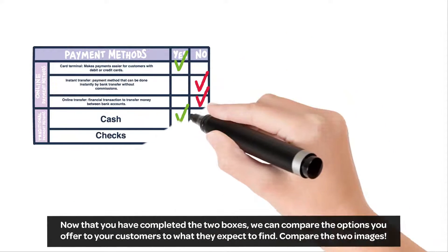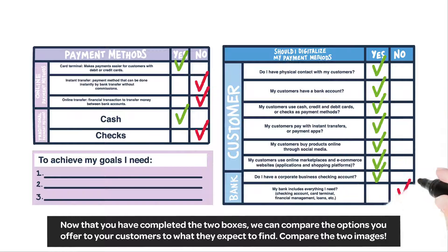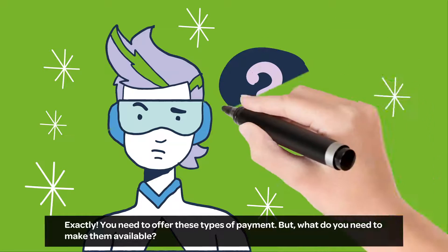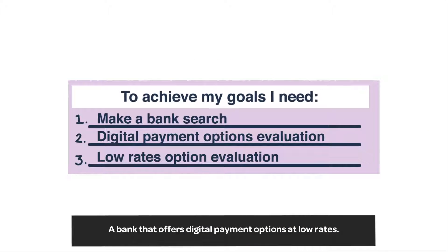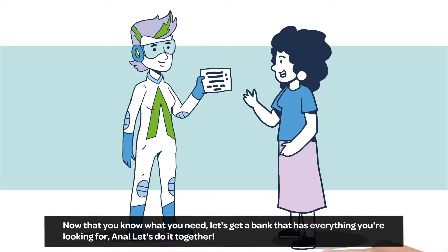Now that you have completed the two boxes, we can compare the options you offer to your customers to what they expect to find. Compare the two images. I see in my image on the right that my customers are going digital — they use online payment methods like instant transfers, and I don't offer this option. Exactly. You need to offer these types of payment, but what do you need to make them available? A bank that offers digital payment options at low rates. Now that you know what you need, let's get a bank that has everything you're looking for, Anna. Let's do it together.